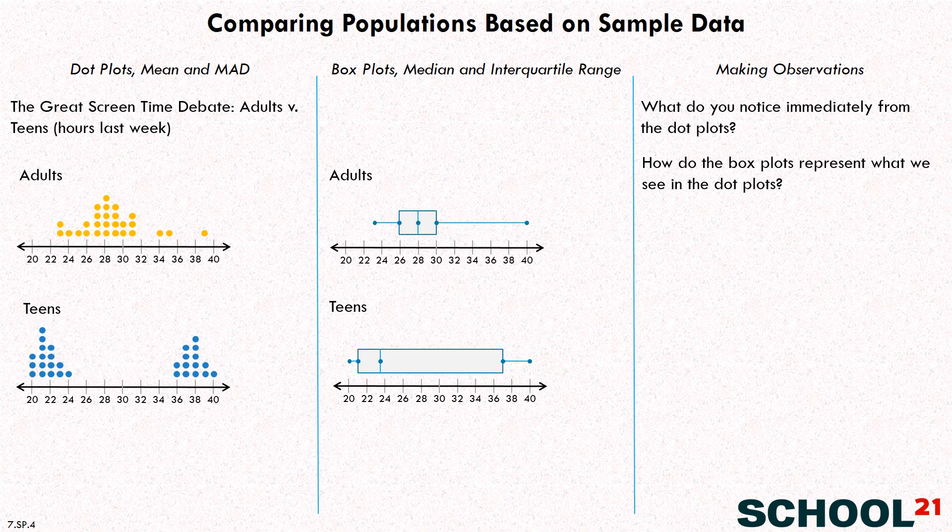All right, now let's go ahead and put in some extra data here for the dot plots. What I've done here, you could calculate this from the points you see, but I won't make you go through that calculation now. The mean of the adults is 28.9 and the mean absolute deviation, the average distance of each point from that mean is 2.8. And for teens, the mean is 29.1 and the MAD is 8.1. We'll come back and discuss this in just a second. Let's do some similar numbers, but different, for box plots. We're going to put in the median for each and the interquartile range, which I've abbreviated here as IQR. So now let's ask ourselves some questions.